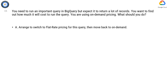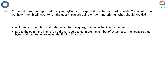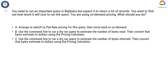Option A: Arrange to switch to flat-rate pricing for this query, then move back to on-demand. Option B: Use the command line to run a dry run query to estimate the number of bytes read, then convert that bytes estimate to dollars using the Pricing Calculator. Option C: Use the command line to run a dry run query to estimate the number of bytes returned, then convert that bytes estimate to dollars using the Pricing Calculator.